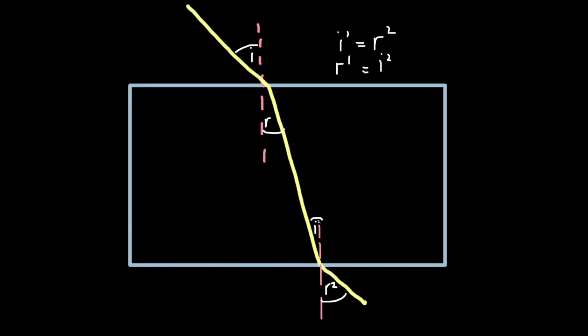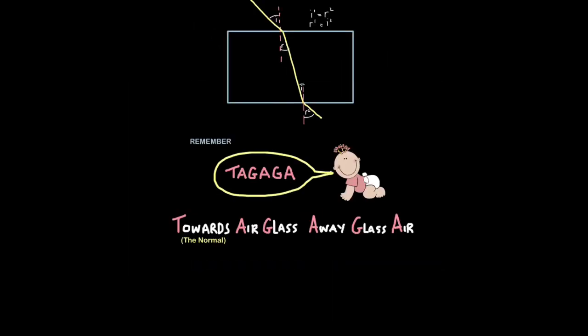This is unlikely to come up, but just so you know, I1 is equal to R2. This angle is equal to this angle. And while I haven't drawn it to scale here, R1 is equal to I2. Even though this one looks small, it should be the same size.